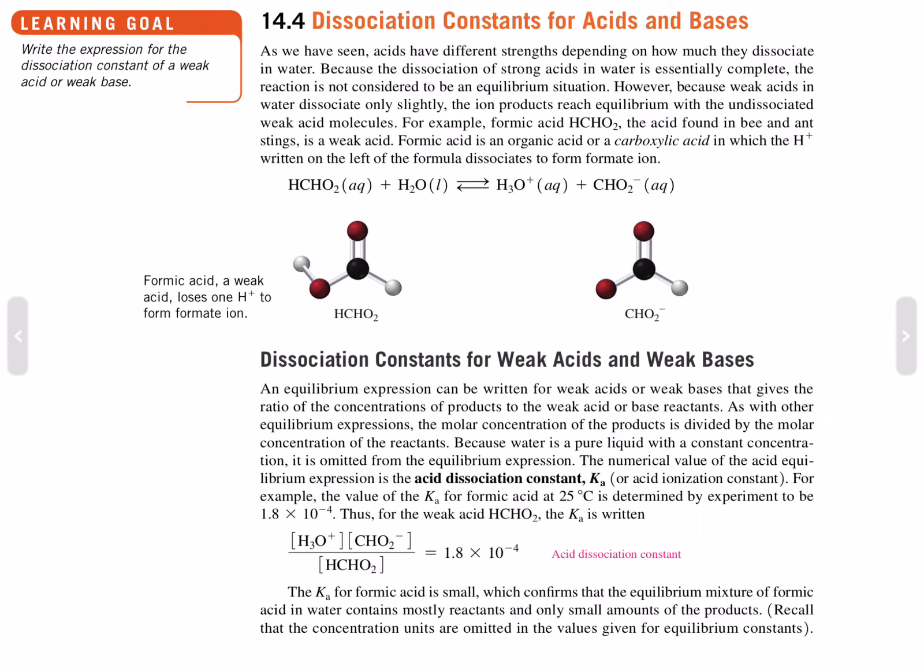the concentration of H3O plus, hydronium, times the concentration of formate, CHO2 negative, divided by formic acid concentration, is 1.8 times 10 to the negative 4.